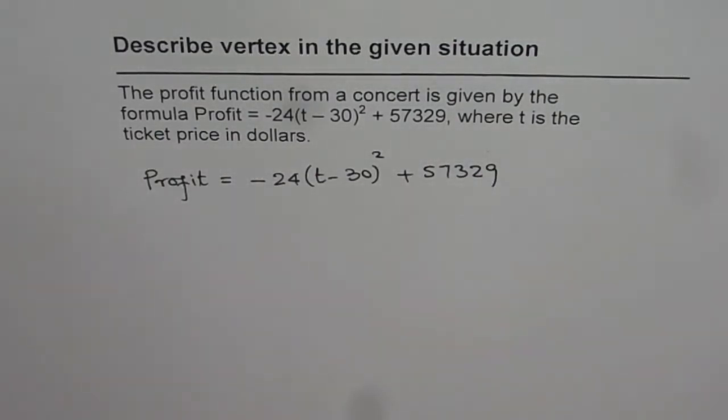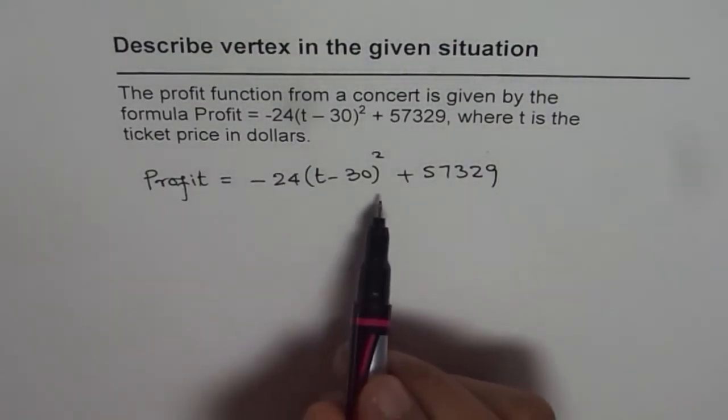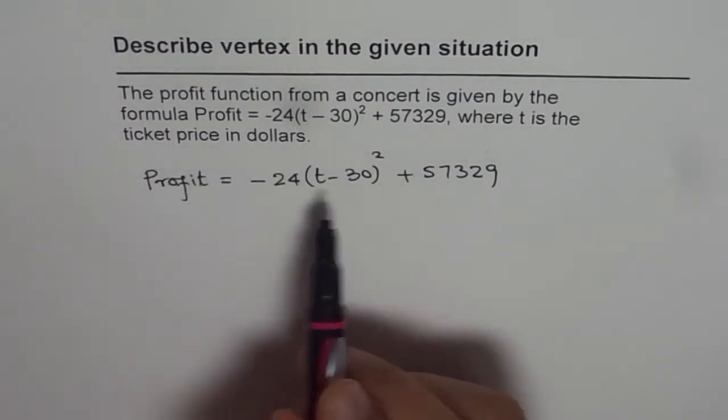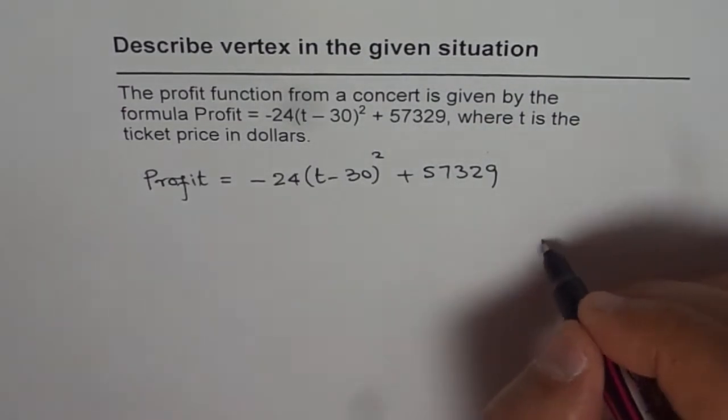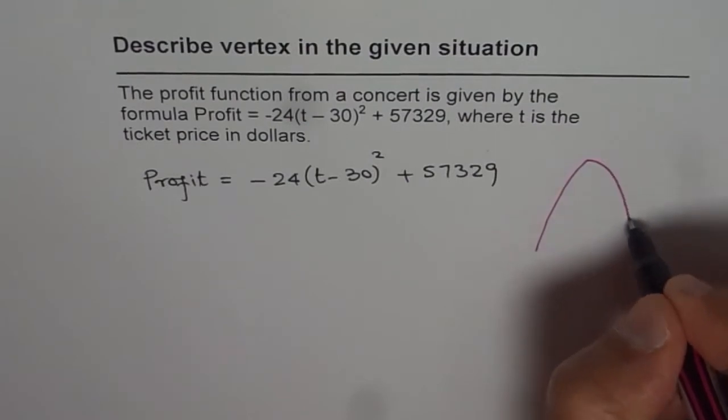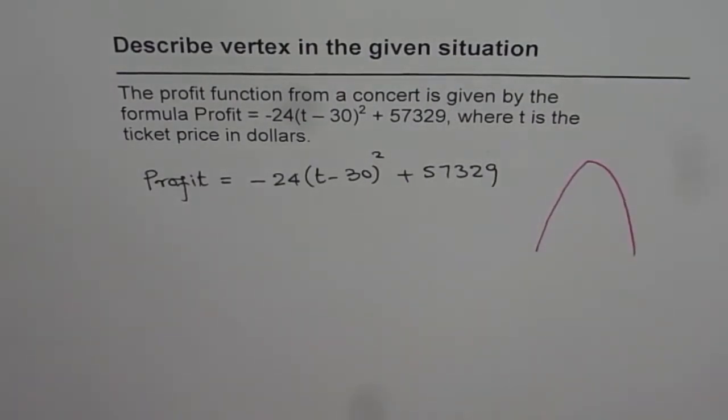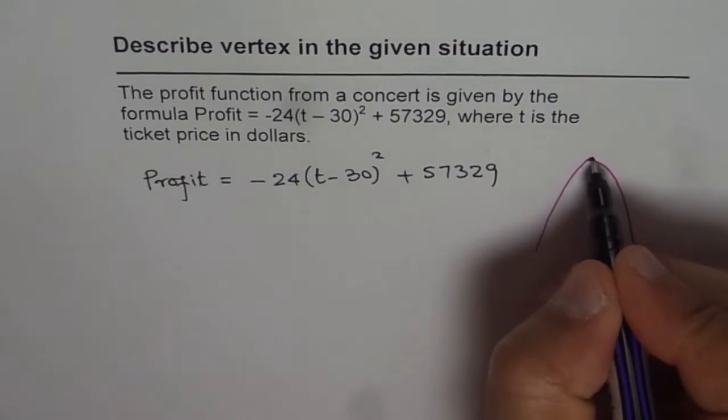Now as you can see, this quadratic equation represents a parabola which opens downwards. So it is kind of like this, where the vertex represents the maximum.